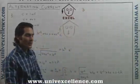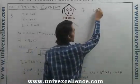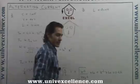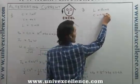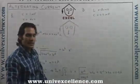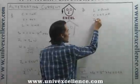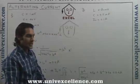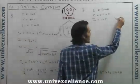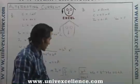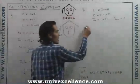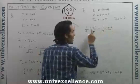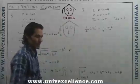An LC circuit consists of a 20 millihenry inductor and a capacitance of 0.5 microfarad. The maximum instantaneous current in the circuit is 0.1 ampere. Find the greatest potential difference across the capacitor. Using energy conservation: half C V_naught² equals half L I_naught², and we need to find V_naught.